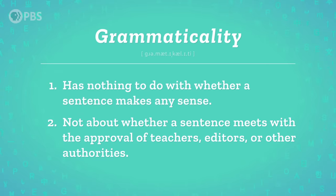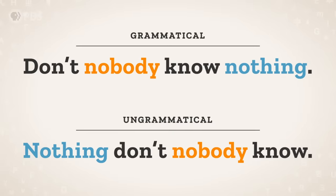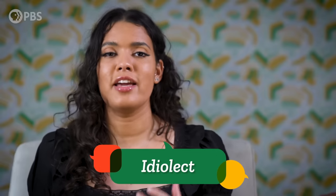Two: grammaticality is also not about whether a sentence meets the approval of teachers, editors, or other authorities. For example, 'don't nobody know nothing' is perfectly grammatical — in fact, someone's probably saying it right now. But 'nothing don't nobody know' is ungrammatical — it's not the way anyone would combine these words. It's amazing that speakers of a language can have such similar grammatical intuitions without ever being formally taught them. That said, our mental grammars are all slightly different from each other, based on our own unique personal version of language, also known as our idiolect. So you may sometimes notice exceptions, or edge cases, or things that I say that don't quite work in your idiolect. That's great — it means you're thinking like a linguist.